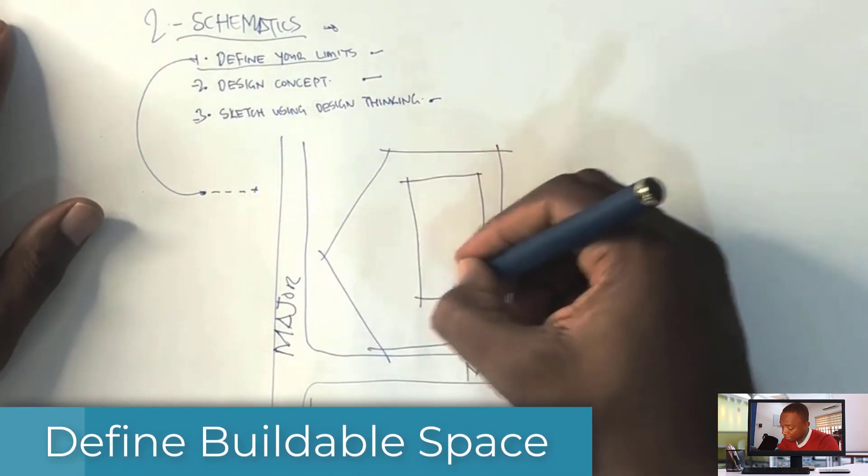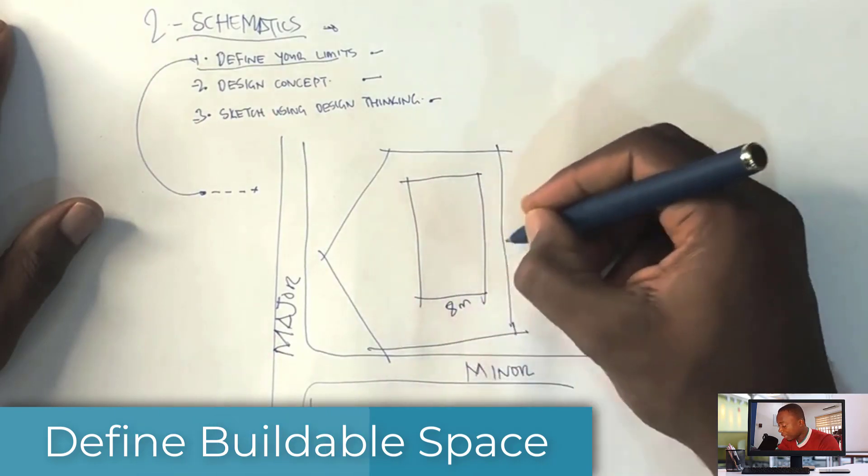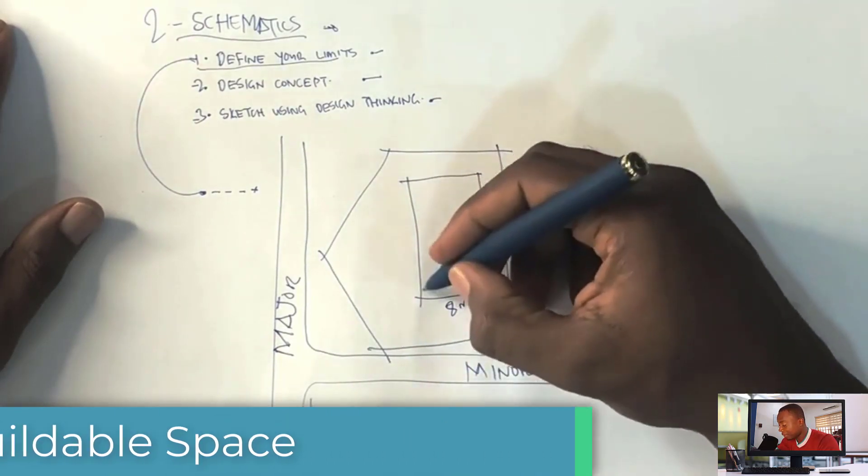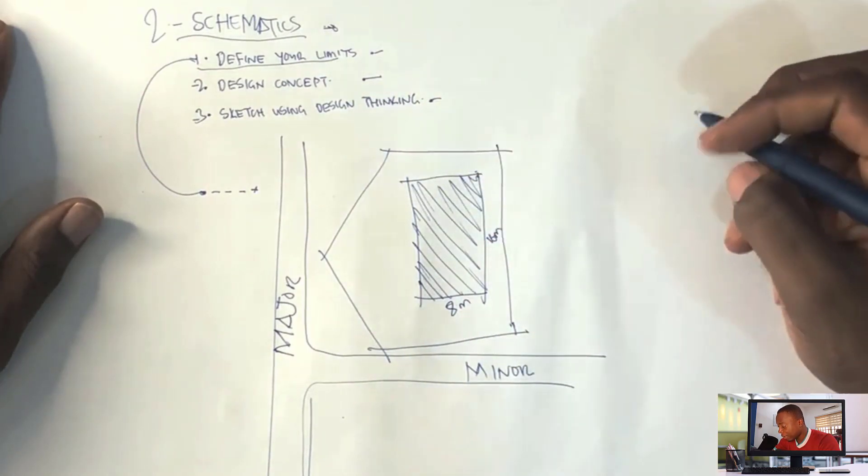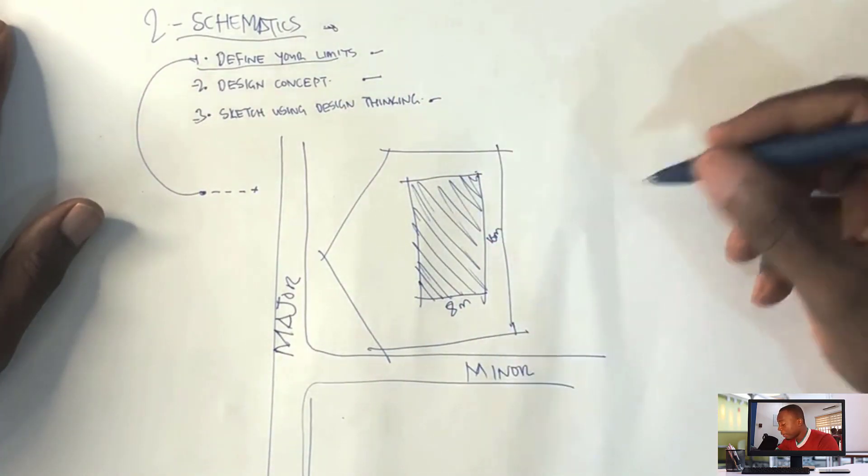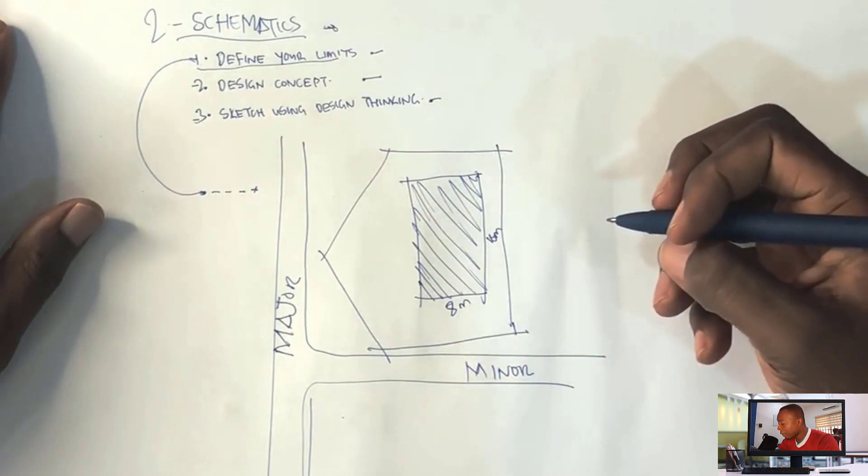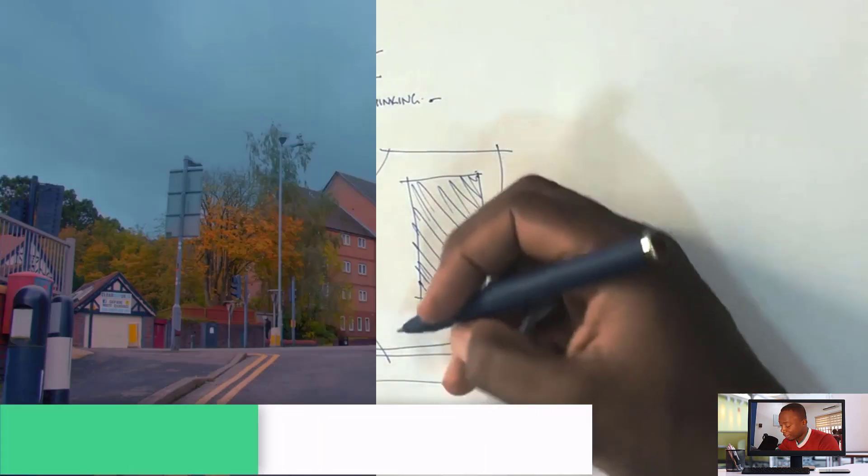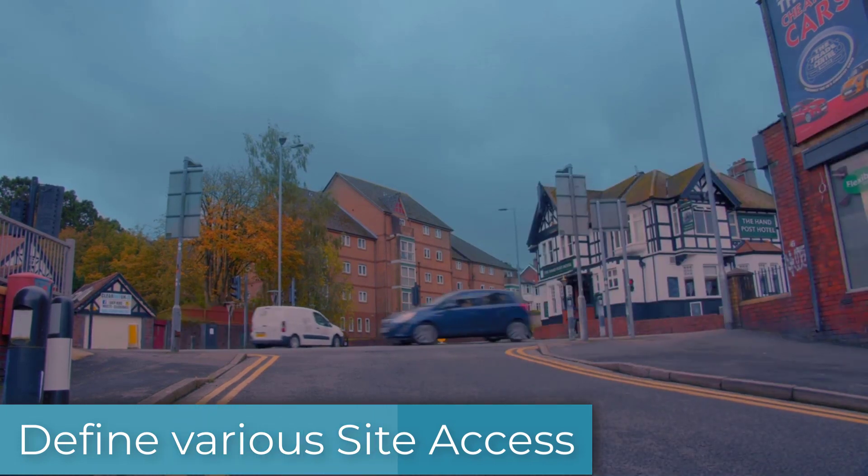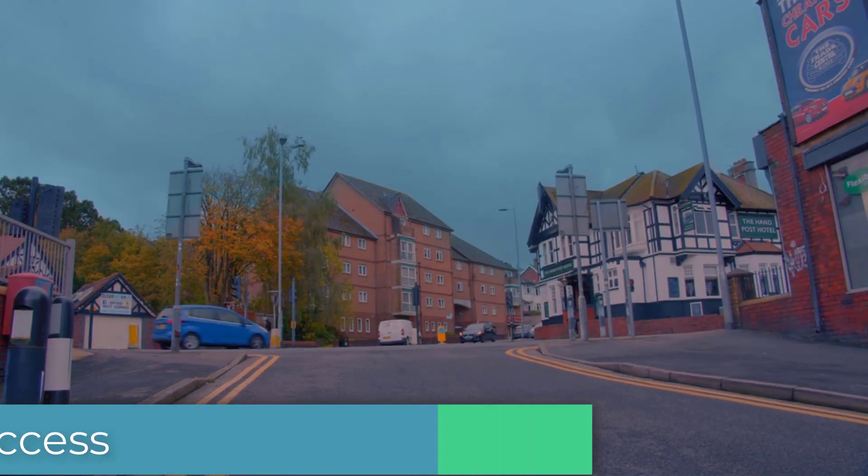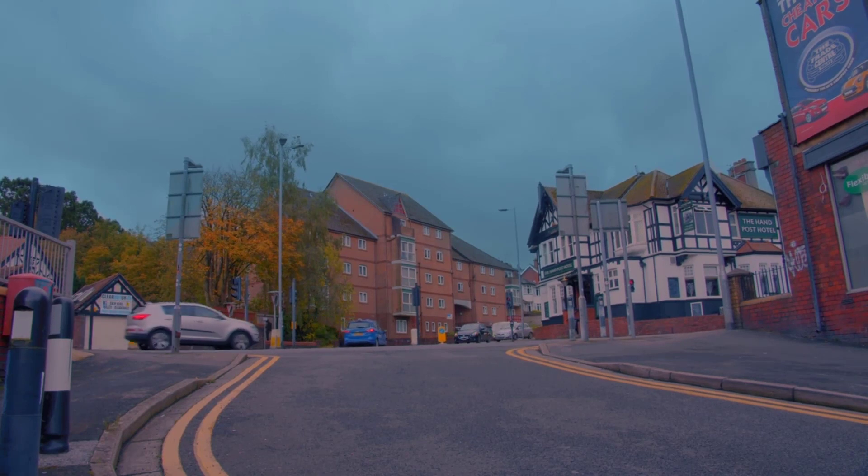It's about eight meters by sixteen meters after observing the appropriate setbacks. The next thing you want to do is imagine the access into the site. Due to the interaction of the site with the major route, we are going to access the site from the minor route to reduce traffic.